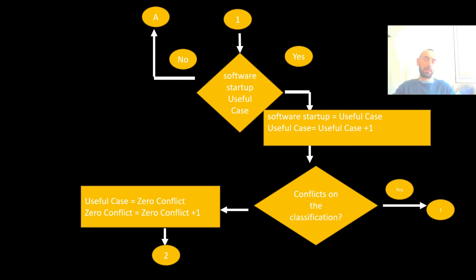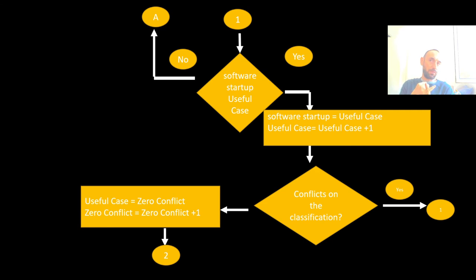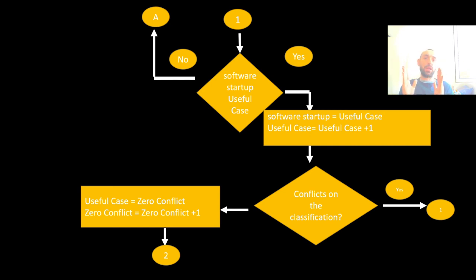To summarize the algorithm: we start with a set of companies. We collect information and descriptions from each company — either directly from the company's website, from their social network, or, if no description exists on the website, from the web archive.